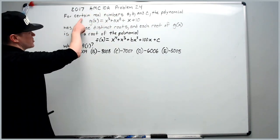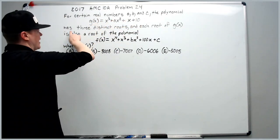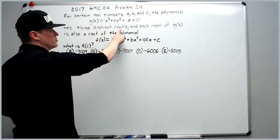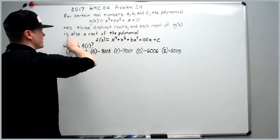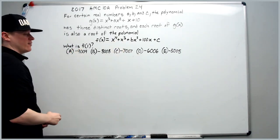It says, for certain real numbers a, b, and c, the polynomial g of x has three distinct roots and each root of g of x is also a root of the polynomial f of x. What is f of 1?